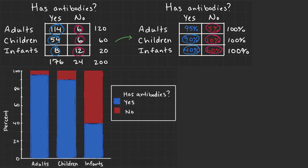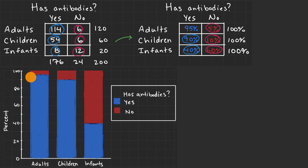In a segmented bar chart, we have a bar for each category — adults, children, and infants — because we're thinking that might have something to do with the likelihood of having antibodies. For each bar, you can see the percentage that have antibodies and the percentage that don't. So 95% of the adult bar is filled in blue for yes, they have antibodies, and 5% is filled in red. For children, 90% is filled in blue and 10% is filled in red. For infants, 40% is filled in blue and 60% don't have the antibodies.